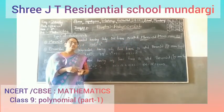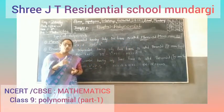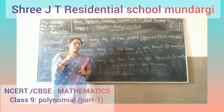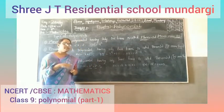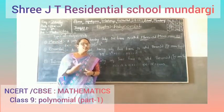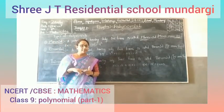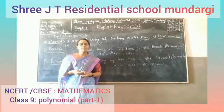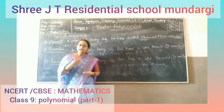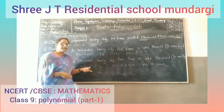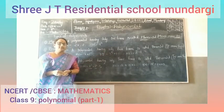So the types of polynomials are: first, monomial — a polynomial having only one term; second, binomial — a polynomial having two terms; and third, trinomial — a polynomial having three terms. These three are the types of polynomials.